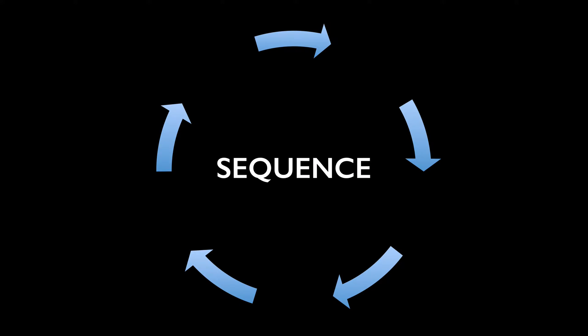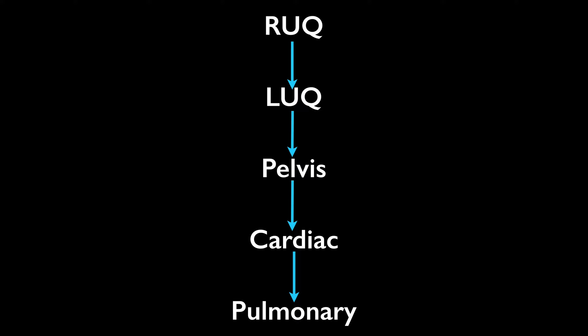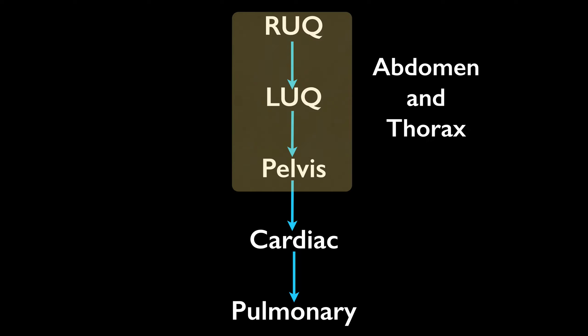The sequence I use for the FAST scan is: right upper quadrant, left upper quadrant, pelvis, cardiac, and finally pulmonary. For the right upper quadrant, left upper quadrant, and pelvis, you're ruling out fluid in the abdomen as well as the thorax.